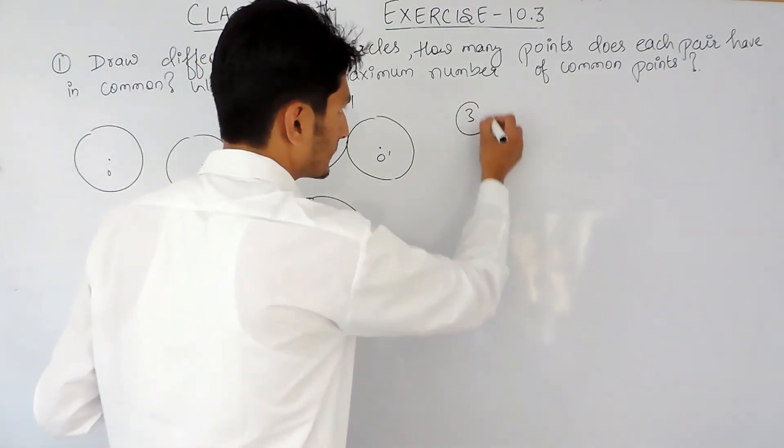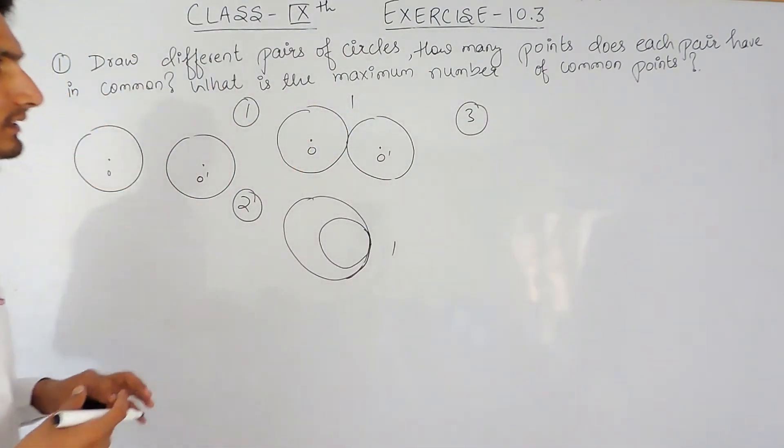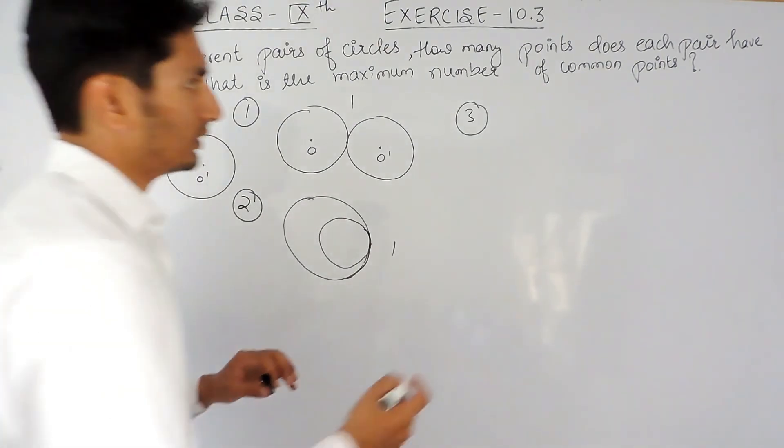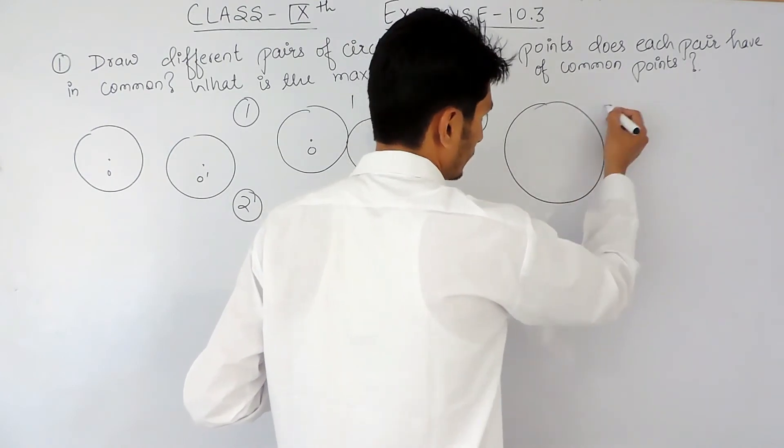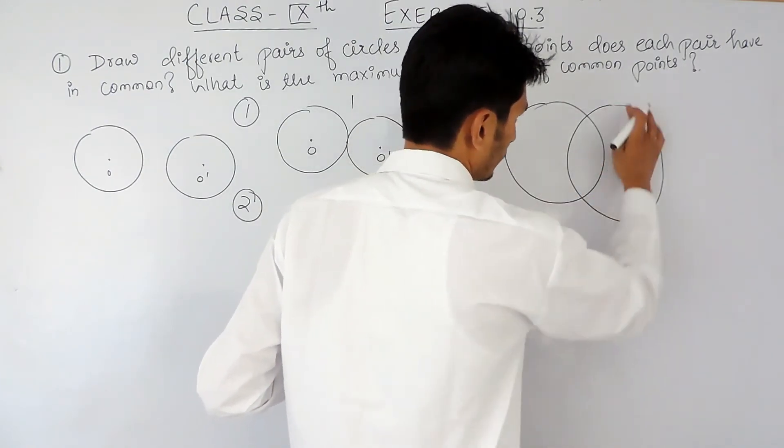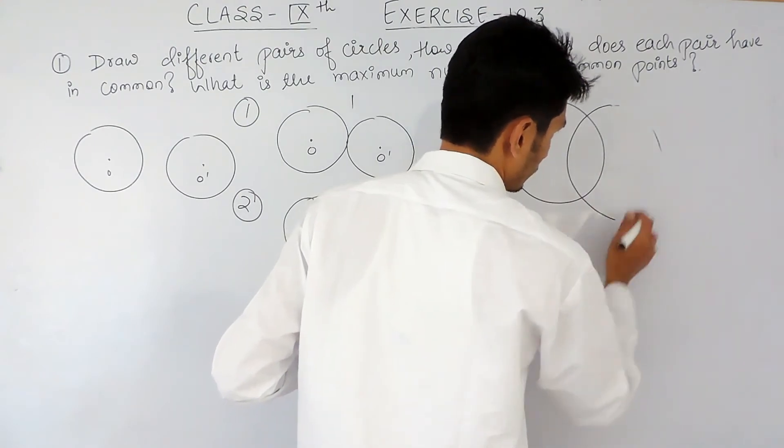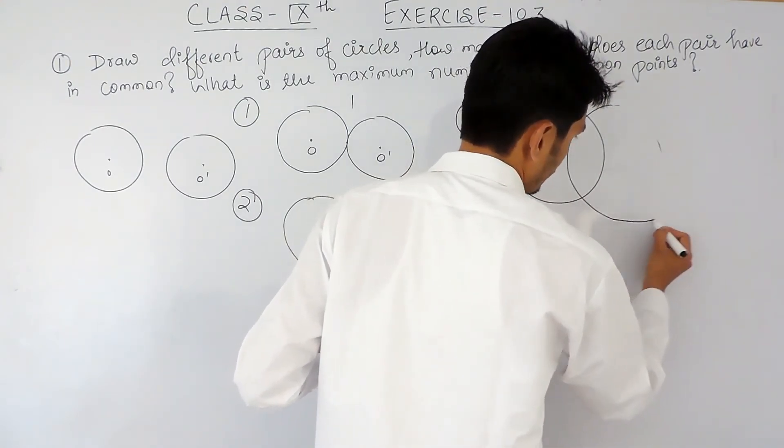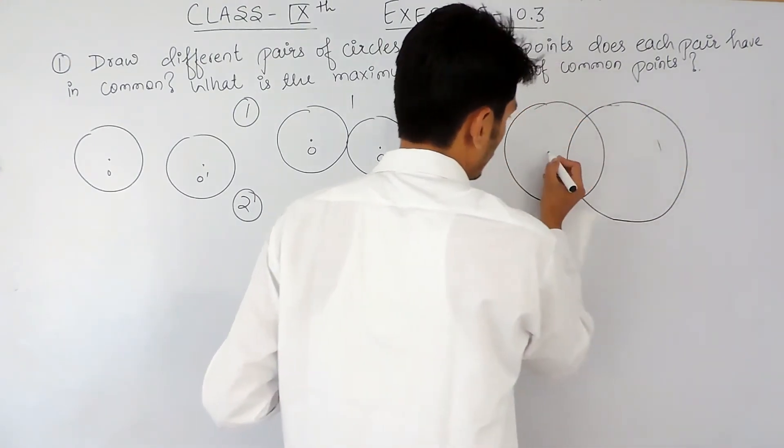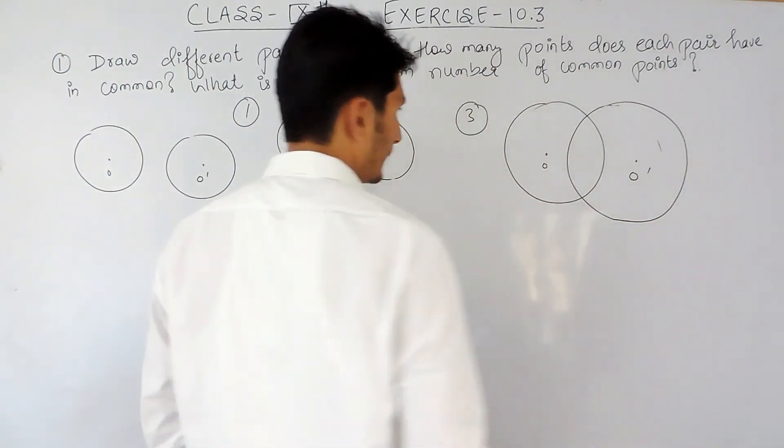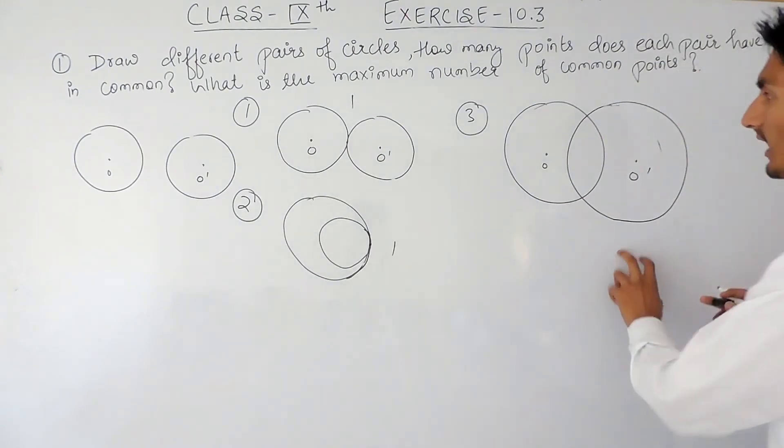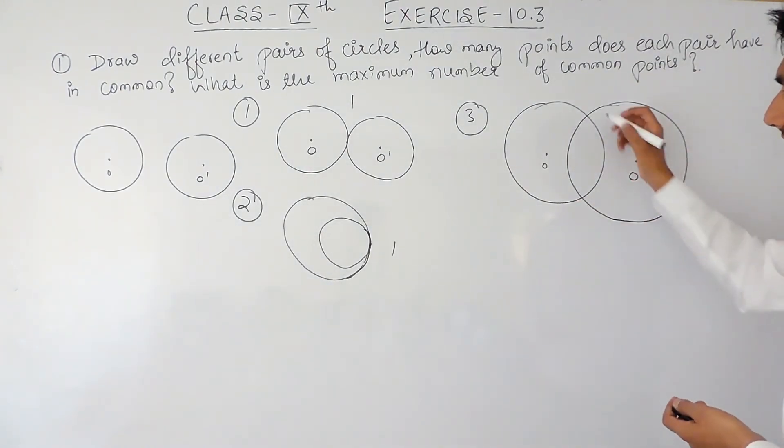And the third case is when these two circles intersect each other. So in this case, these two circles are intersecting each other.